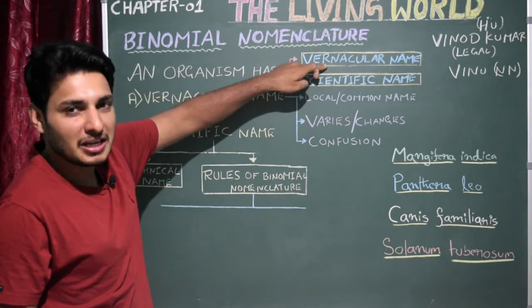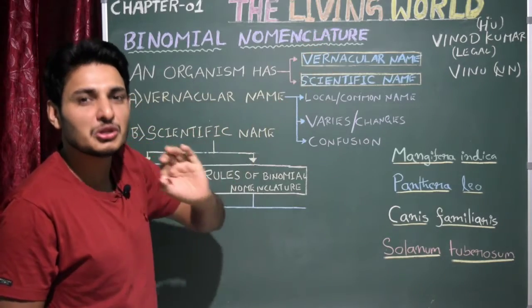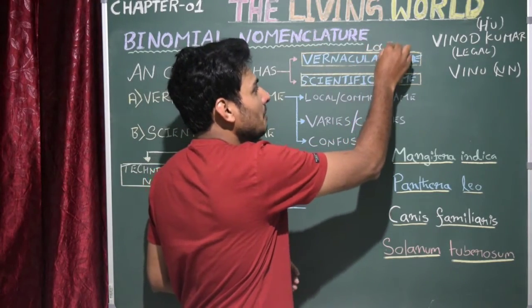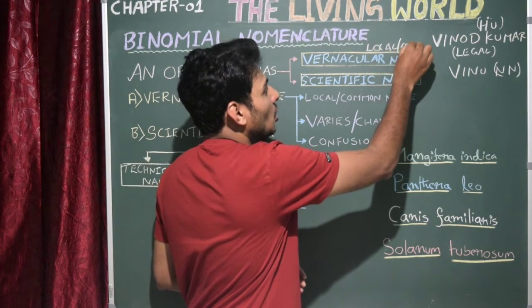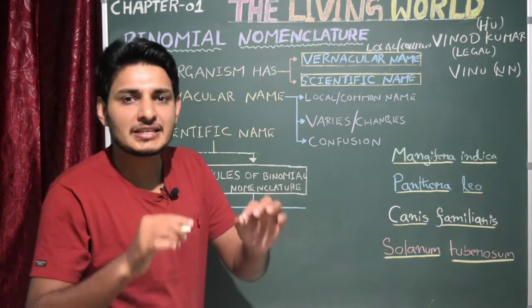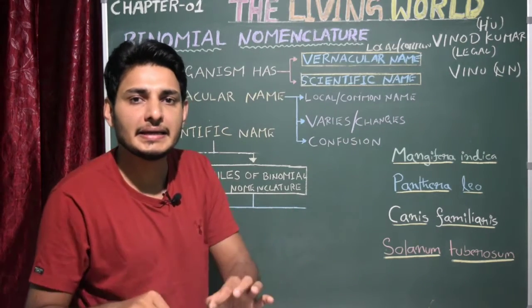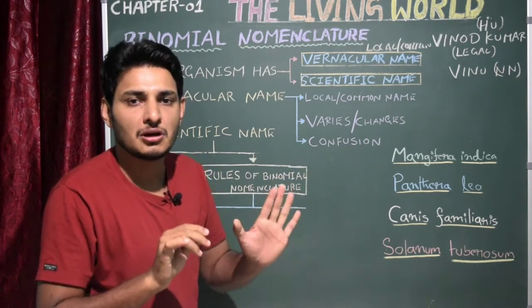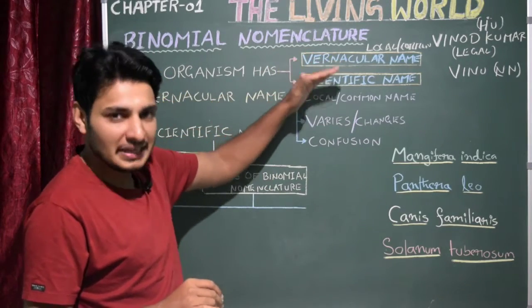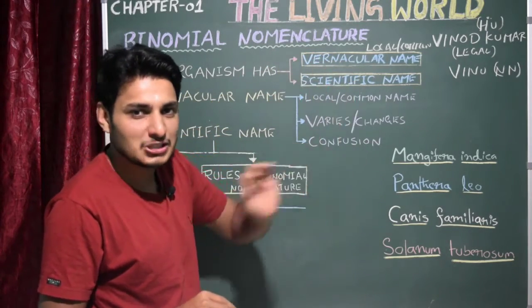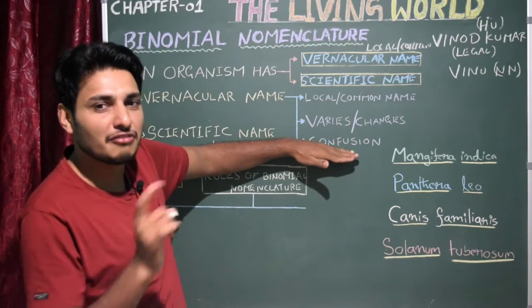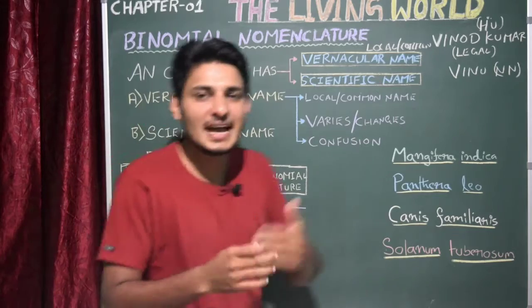So an organism has a vernacular name. A vernacular name is nothing but the local name — it is also called a common name. This particular local or common name is restricted to a particular area or particular language. So the vernacular name varies from place to place; it is not constant.